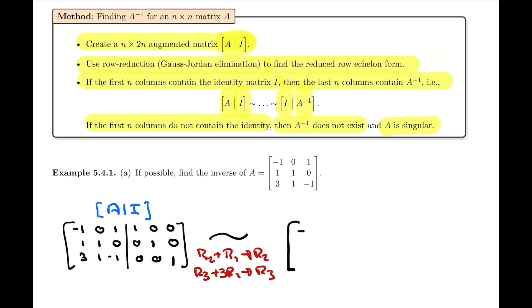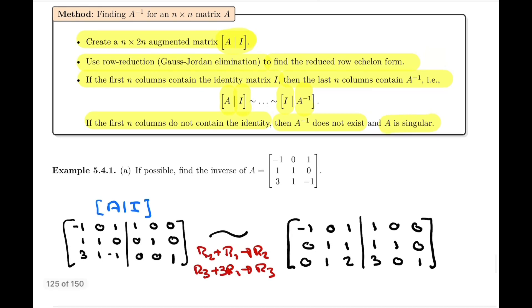That will give us... Row 1 is the one we're not changing, so let's recopy that one first: 1, 0, 0, 1, 0, 0. Then 0, 1, 1, 1, 1, 0. And finally 0, 1 minus 1 plus 3 is 2, then 3, 0, 0, and 1. So that's our new matrix.